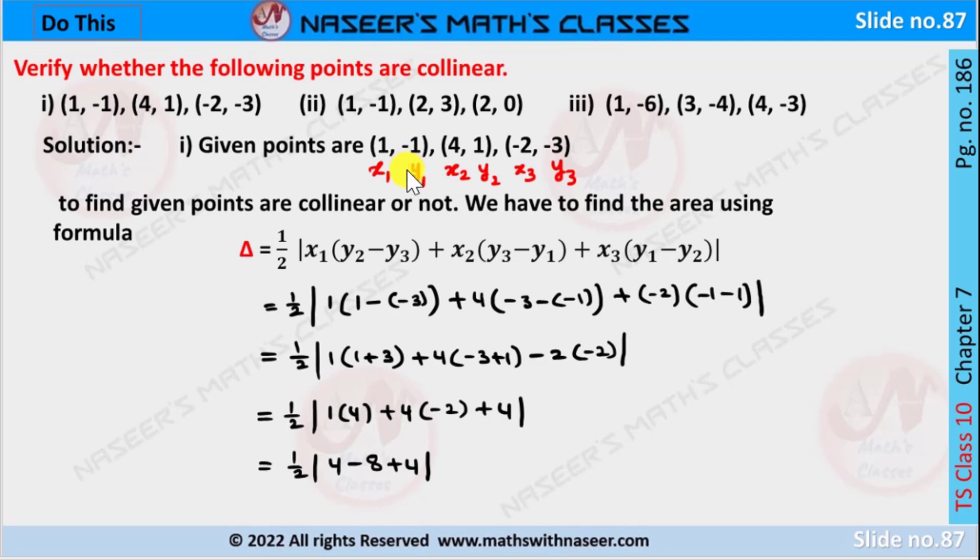Let these ordered pair coordinates be x₁y₁, x₂y₂, x₃y₃. To find if the given points are collinear or not, we have to find the area using the formula.